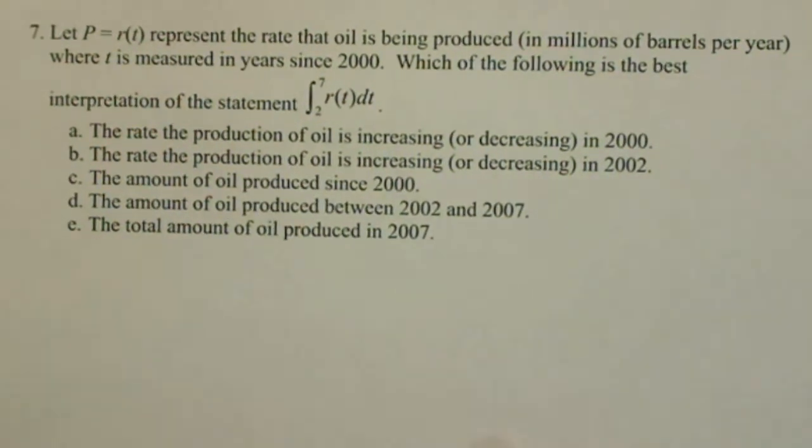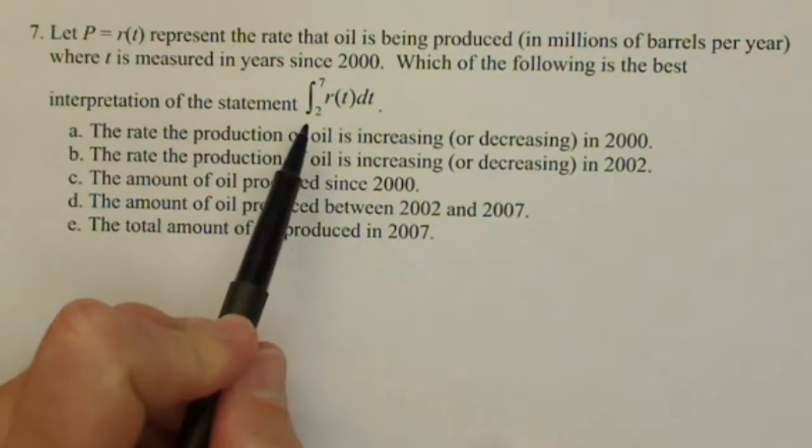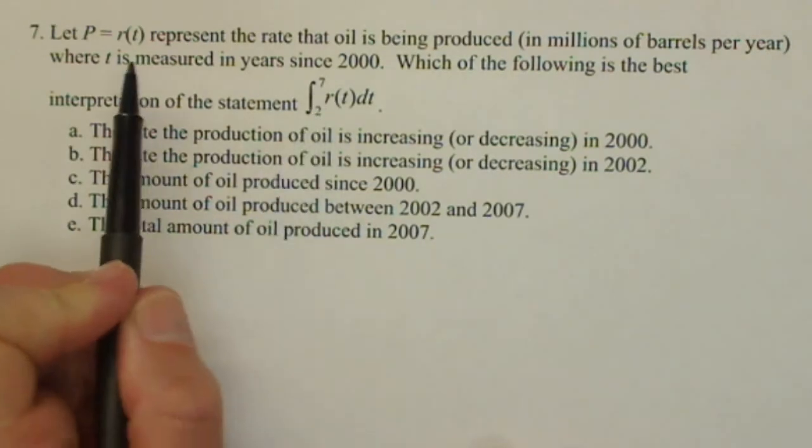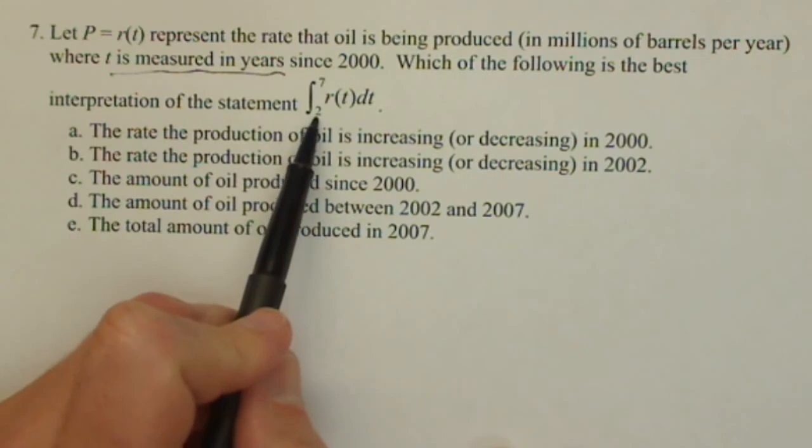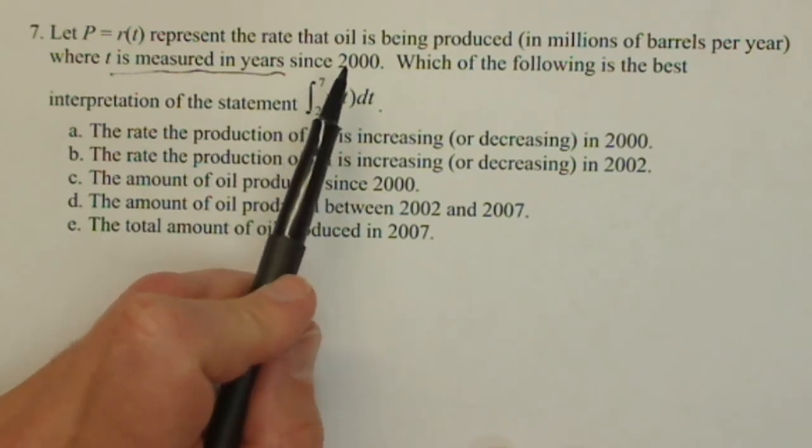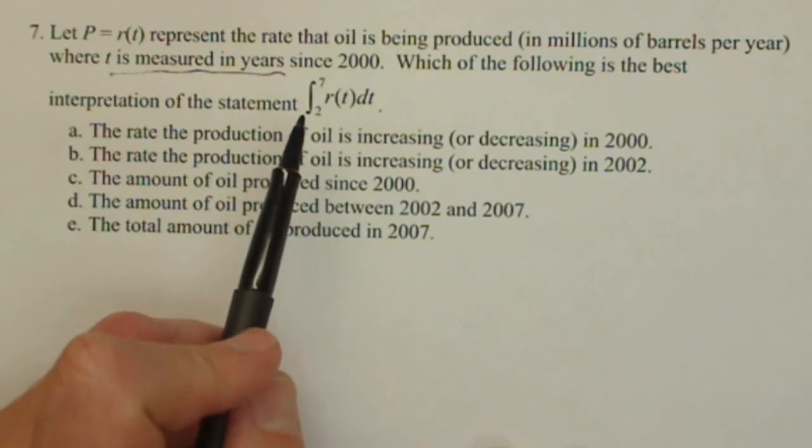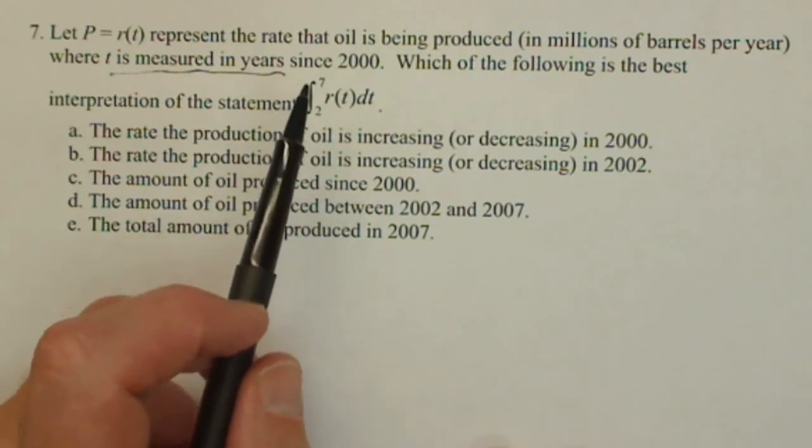Let's break down the basics. First, let's talk about what the 2 and 7 represent. These are t values, and t is measured in years since 2000. So 2 would be 2002 and 7 would be 2007. This interval is talking about something that's happening between 2002 and 2007.